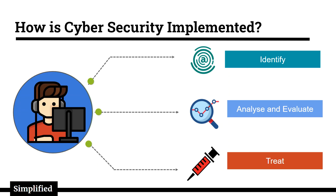The next step is to evaluate and analyze the problem — we have to make sure we isolate all the data and information that may have been compromised in the attack. Finally, after evaluating and analyzing the problem, the last step is to develop a patch that actually solves the problem and brings the organization back to a running state.